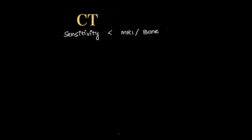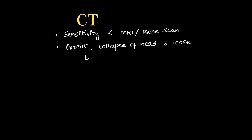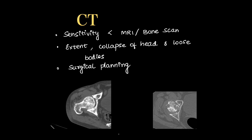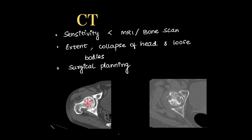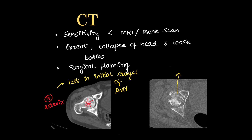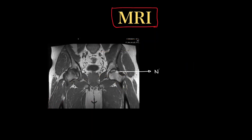Coming to CT: it is less sensitive than MRI or bone scan but more sensitive than X-ray. It is used to see the extent of disease, the collapse of the head, and any loose bodies, which are seen better on CT than X-ray. It is also used for surgical planning. The normal femoral head on CT shows an asterisk sign, which is lost in early stages of AVN — that is the first CT sign. In later stages, destructive changes in the head become visible.